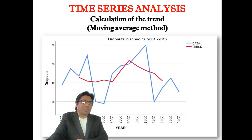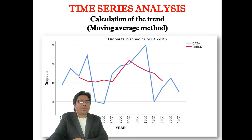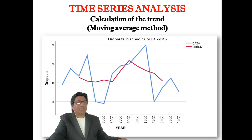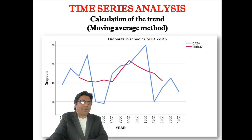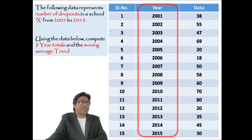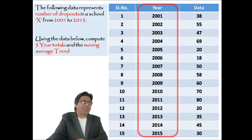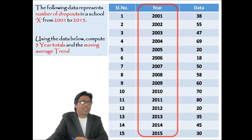In this example, we are going to compute the time series and calculate the trend value using the moving average method. The example gives information about a particular school, and this data represents the number of dropouts in that school.